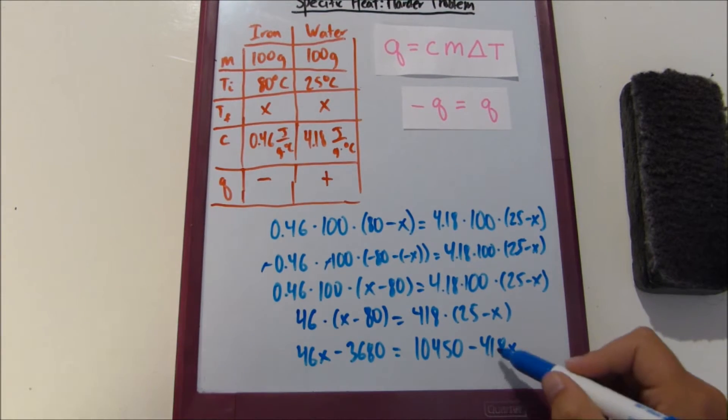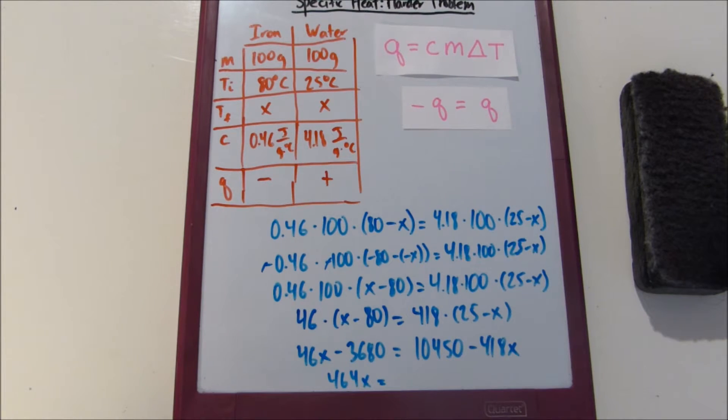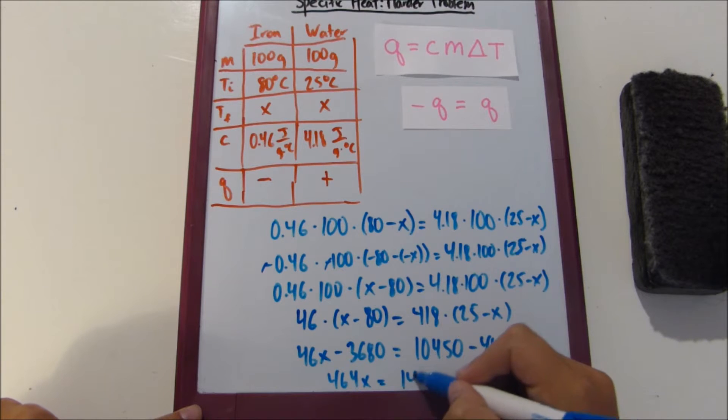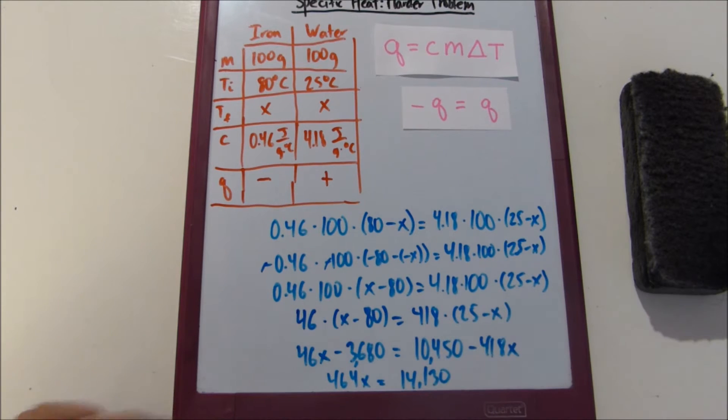So add this across and add that across. So 46 plus 418 equals 464X equals 10,450 plus 3,680. All right, cool, cool, cool. 14,130. Put some commas in here.